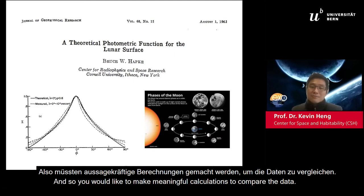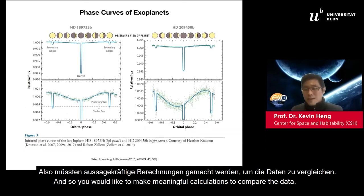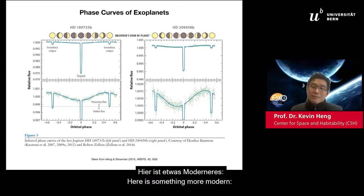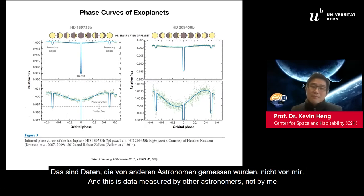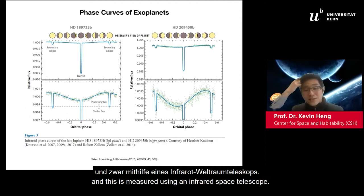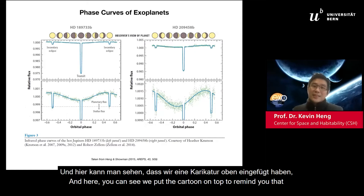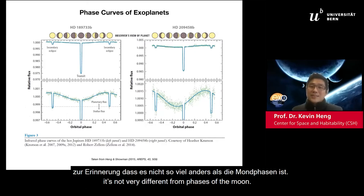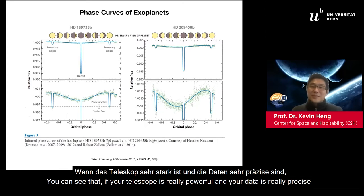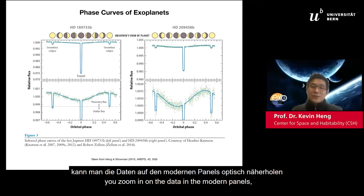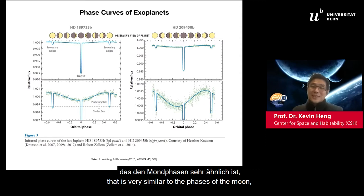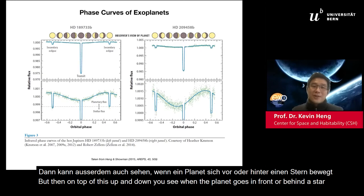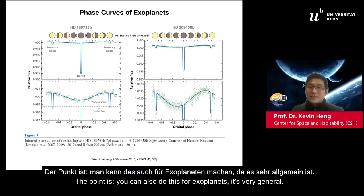You would like to make meaningful calculations to compare the data. Here's something more modern — this comes from a review I wrote in 2015 with the late Adam Shulman. This data was measured using the Spitzer infrared space telescope. We put a cartoon on the top to remind you it's not very different from the phases of the moon. If your telescope is powerful and your data precise, you can see an up-and-down pattern similar to the moon's phases, and on top of that, when the planet goes in front and behind the star — transits and eclipses. The point is you can also do this for exoplanets.